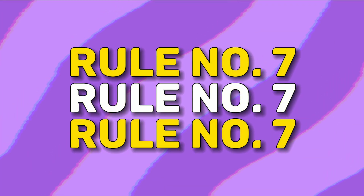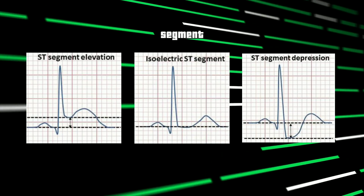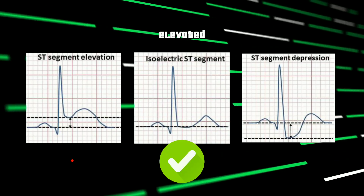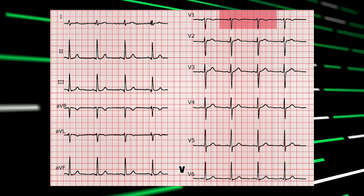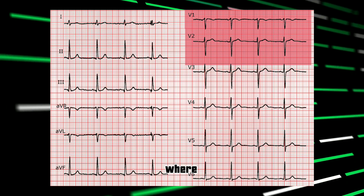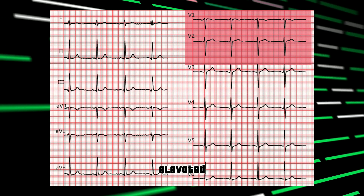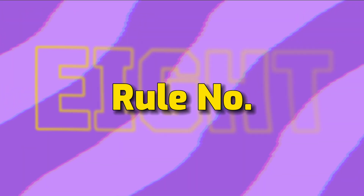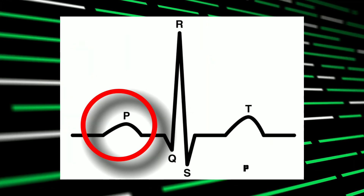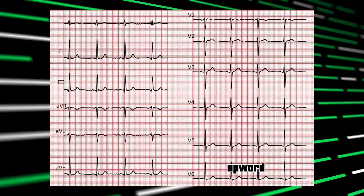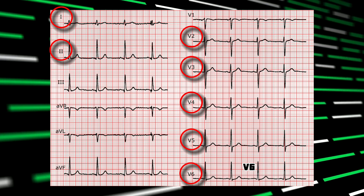Rule number 7: the ST segment should not be elevated or depressed, except in V1 and V2 where it may be slightly elevated. Rule number 8: the P wave should be upward in leads 1, 2 and V2 to V6.